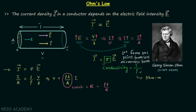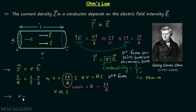Therefore, voltage V is directly proportional to current I, and we can write V equals R times I. This is the second form of Ohm's law, also known as the circuit form of Ohm's law.